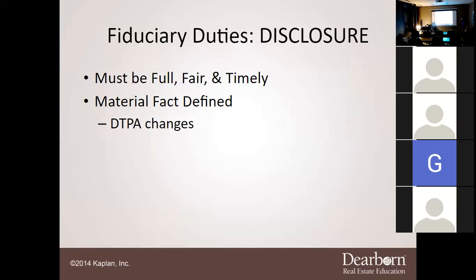Material fact — what exactly is it? Say Mr. Jacob calls and says the pipes behind the walls better be blue because he loves blue, or he's not buying the house. Is that material? No — it doesn't affect how the pipes work. That's a preference, not a material fact. The color is cosmetic. Mr. Jacob cannot back out of the contract because the pipes aren't blue.